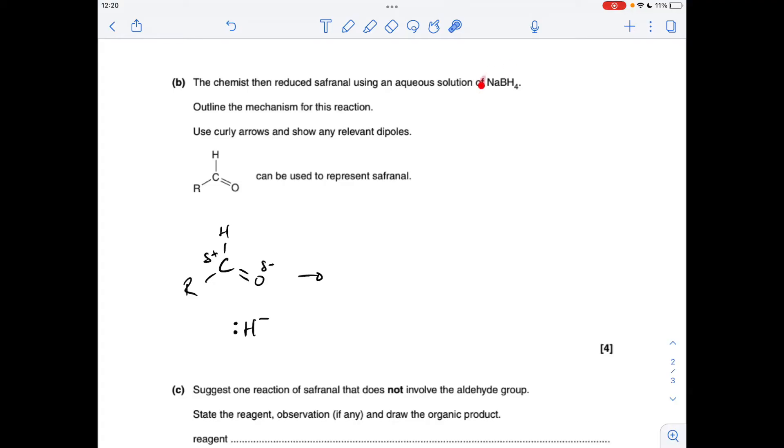The reducing agent NaBH4 is a source of hydride ions so we show a hydride ion like that and we take a pair of electrons from the lone pair on the H minus ion to the slightly positive carbon and that's going to repel the pi electron pair completely onto the oxygen so the pi bond part of the C=O bond breaks by heterolytic fission.